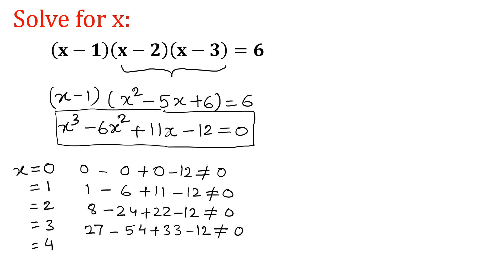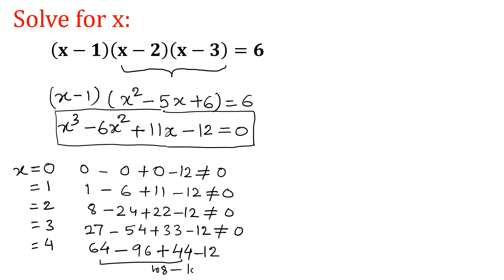Putting x = 4: 4 cubed is 64, minus 6 times 16 is 96, plus 44, minus 12. So 64 minus 96 plus 44 minus 12 equals 0. That means x = 4 satisfies the equation.